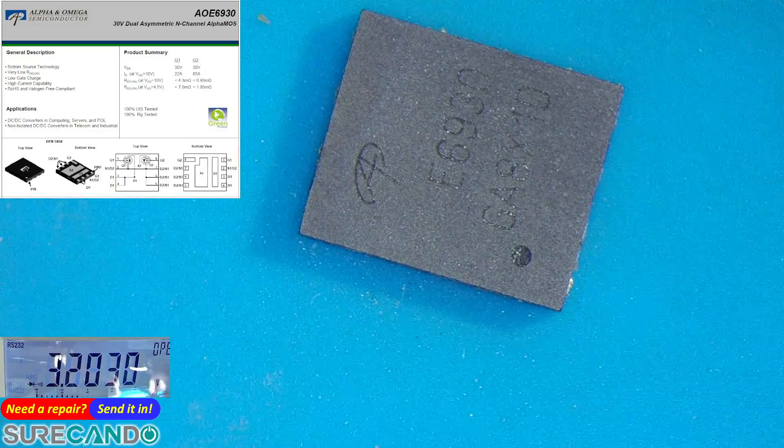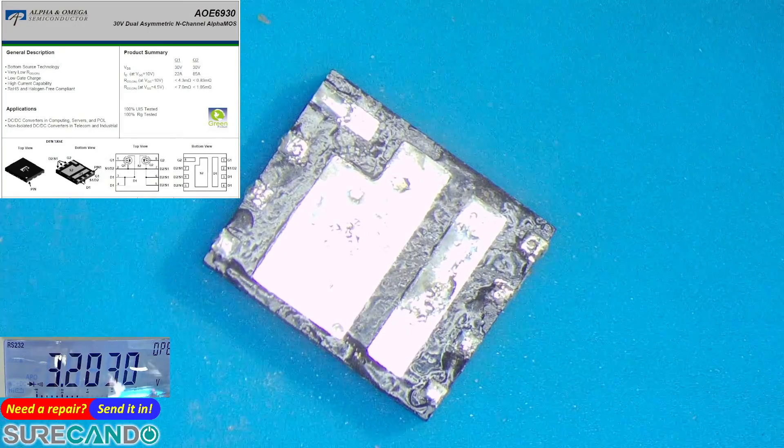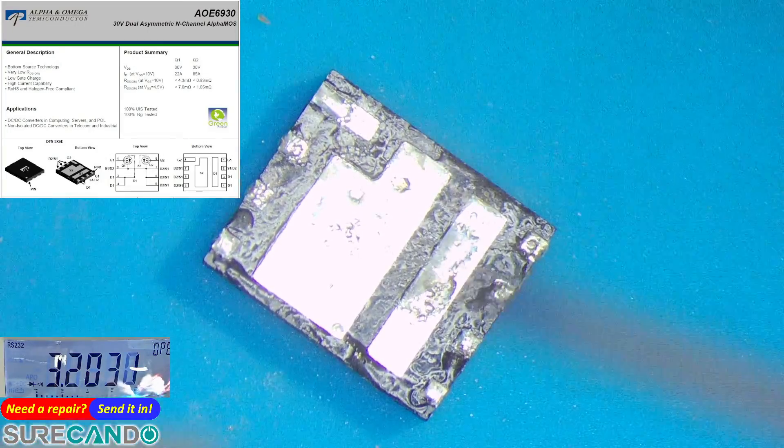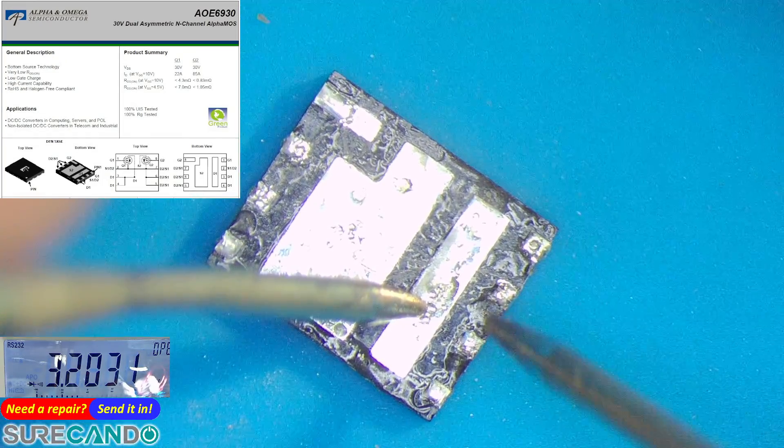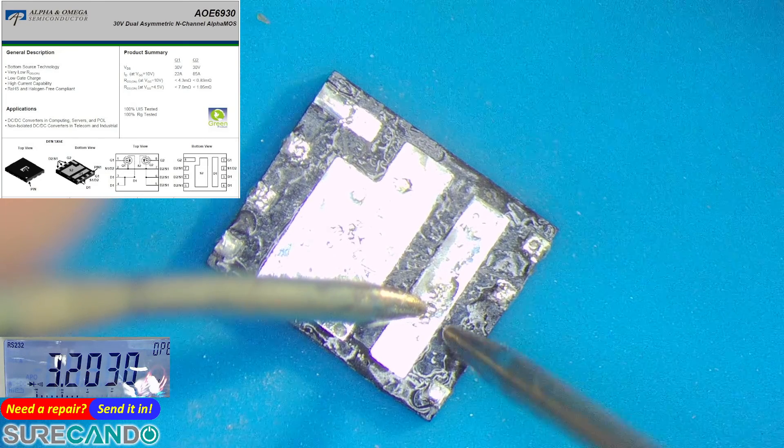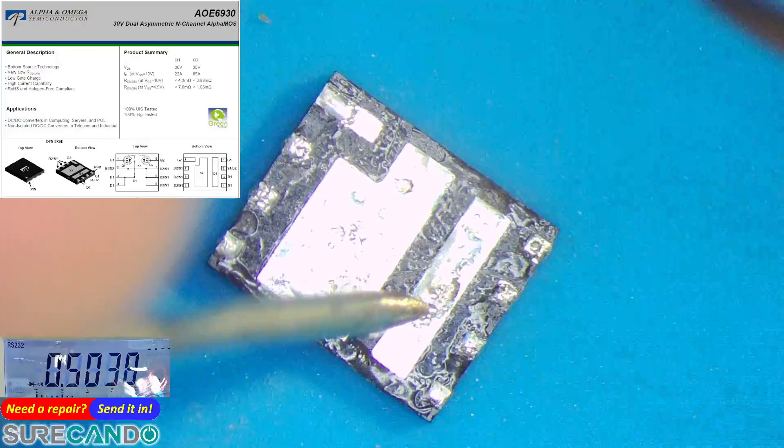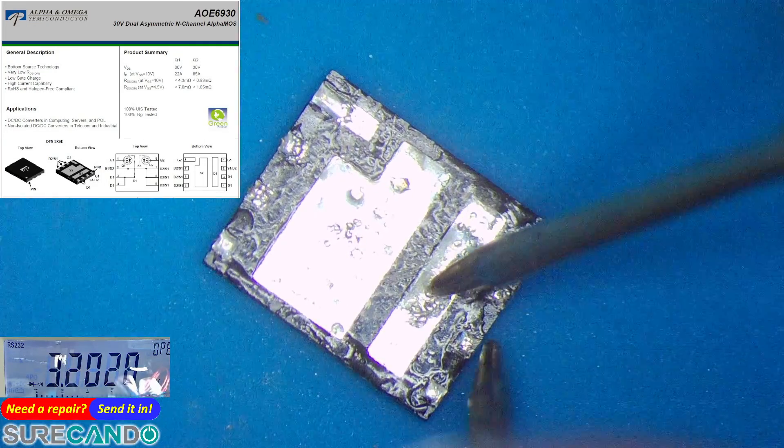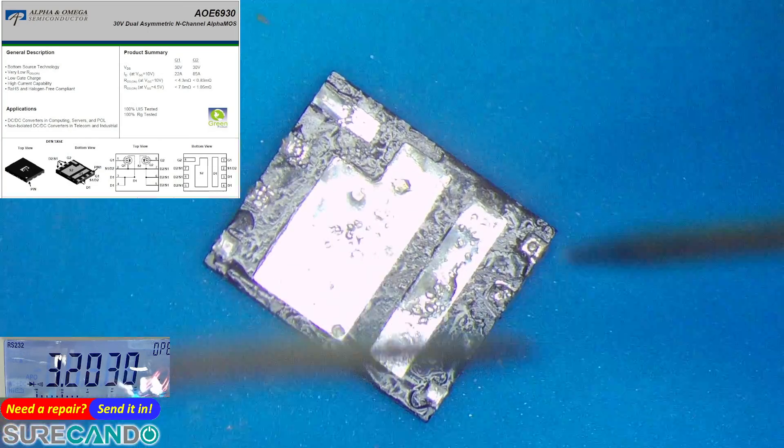Now let's test the other MOSFET, the dual channel. Same thing before, this drain is connected to here. The source is here for this MOSFET. Good. Now let's rotate, no voltage drop. That was good.